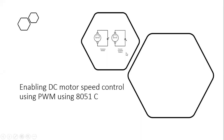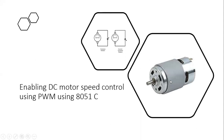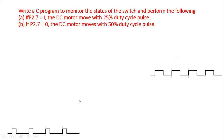In this video, we will discuss how to control the speed of a DC motor using the PWM technique by writing a program in 8051 C. The type of motors we are going to use are electronic motors used for robotic applications and other automation applications.